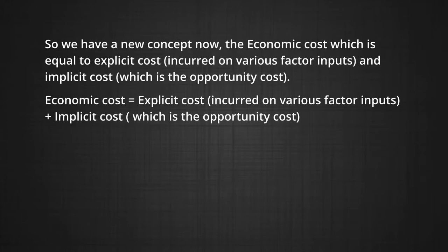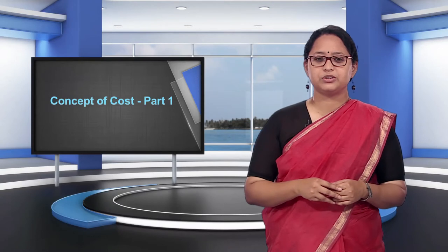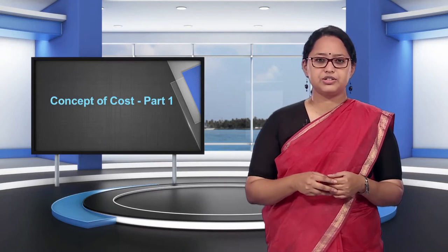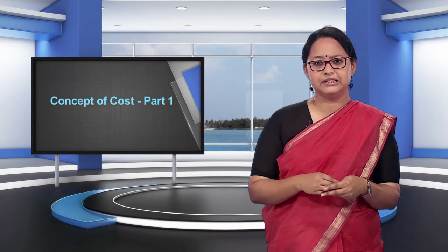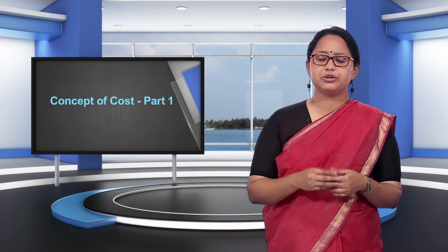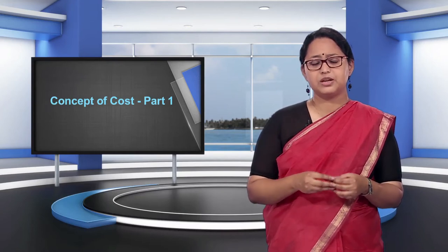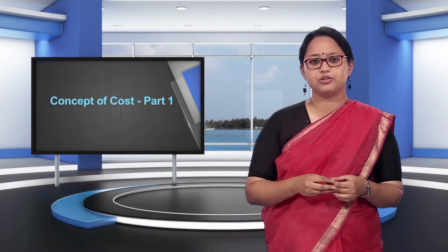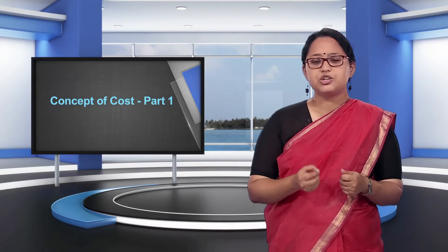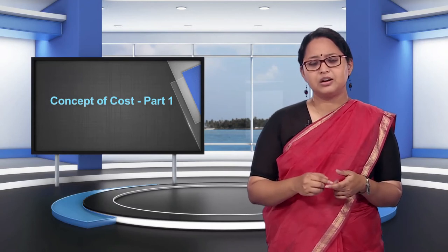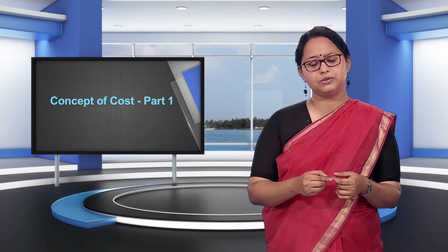So we have a new concept now — the economic cost, which is equal to explicit cost incurred on various factor inputs and implicit cost, which is the opportunity cost. This opportunity cost could also be for other factor inputs and not just from the labor from farming. If instead of using the land for the flour mill it was used for a grocery shop, it might have earned some money as rent. This lost income is also an opportunity cost.